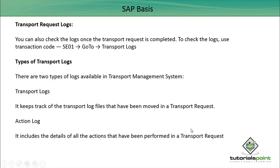There are different types of logs that exist in the transport log files. One is Transport Logs and the other is Action Logs. Transport Logs keep track of the log files that have been moved in a transport request. Action Logs include the details of all the actions that have been performed in a transport request. So two types of transport log files are available under TMS.